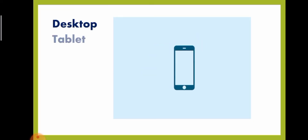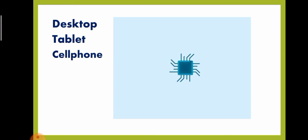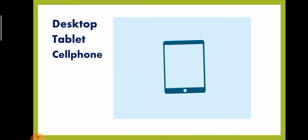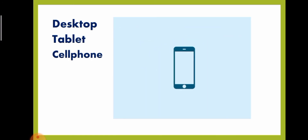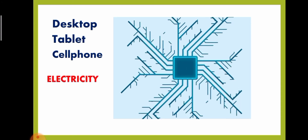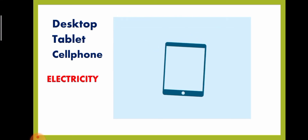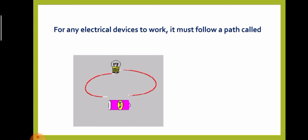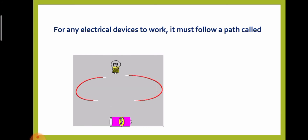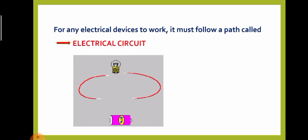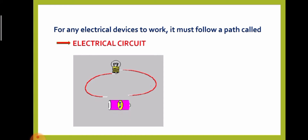Desktop, tablet, cell phone — name any gadget that you have at home and they have one thing in common. They are powered by electricity. For any electrical devices to work, it must follow a path called an electrical circuit.